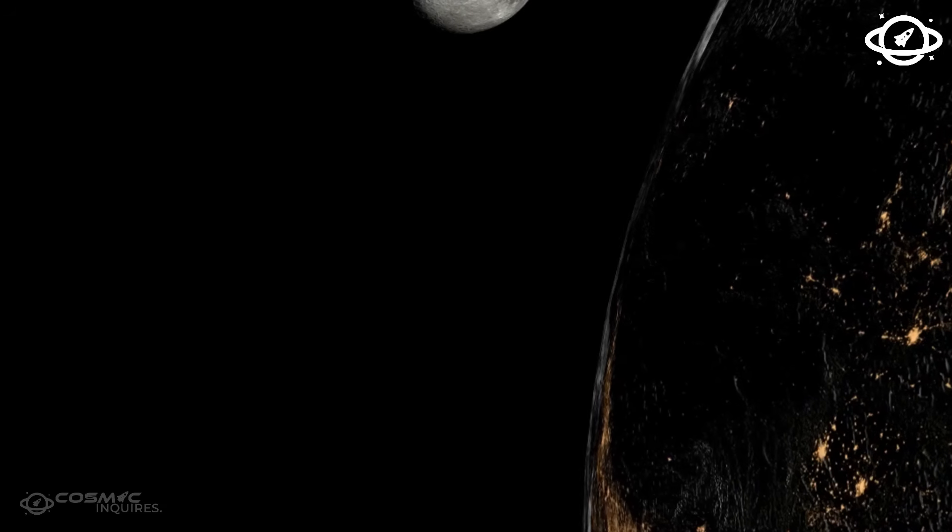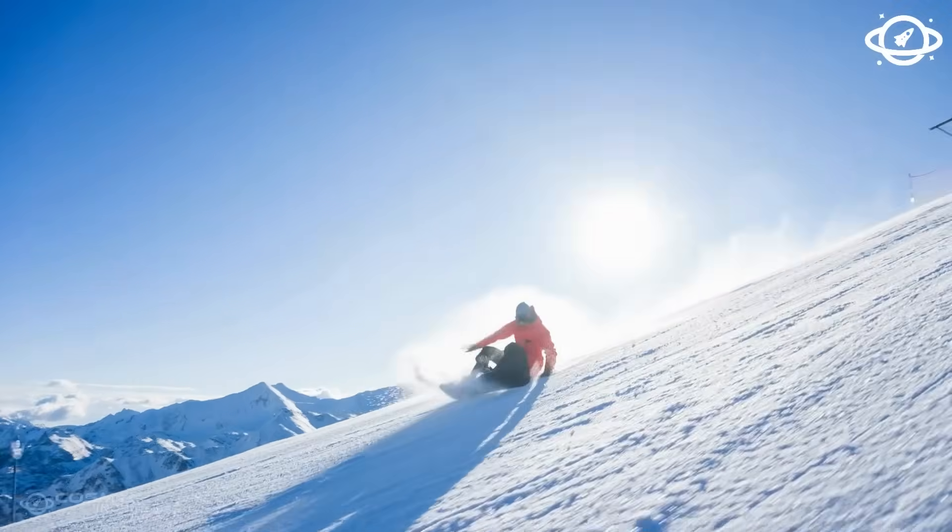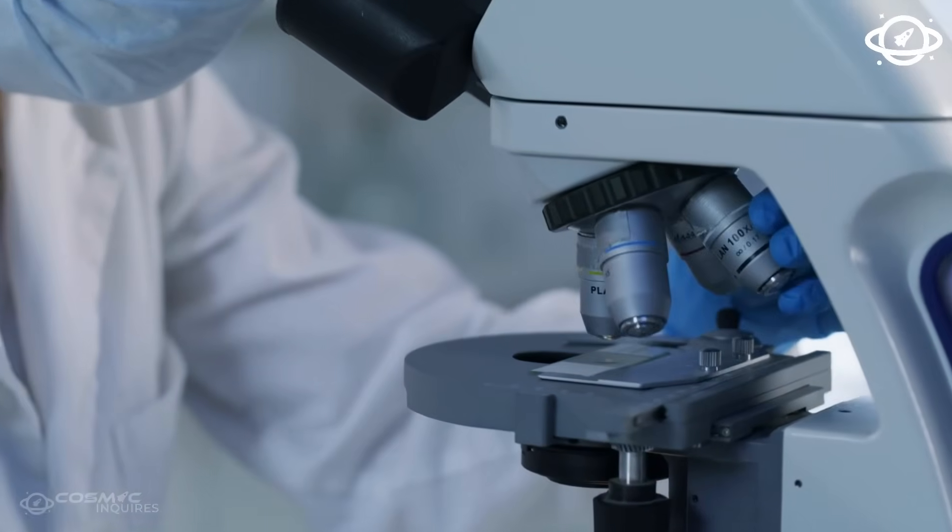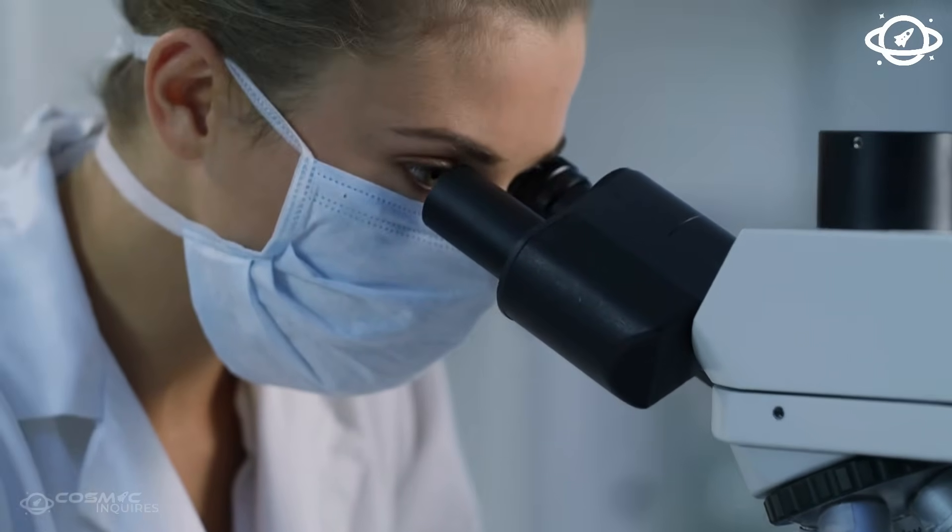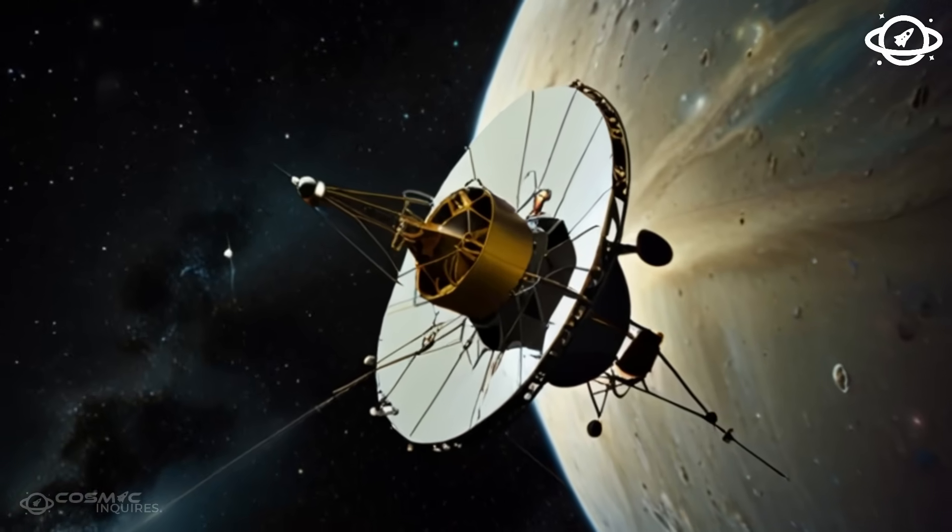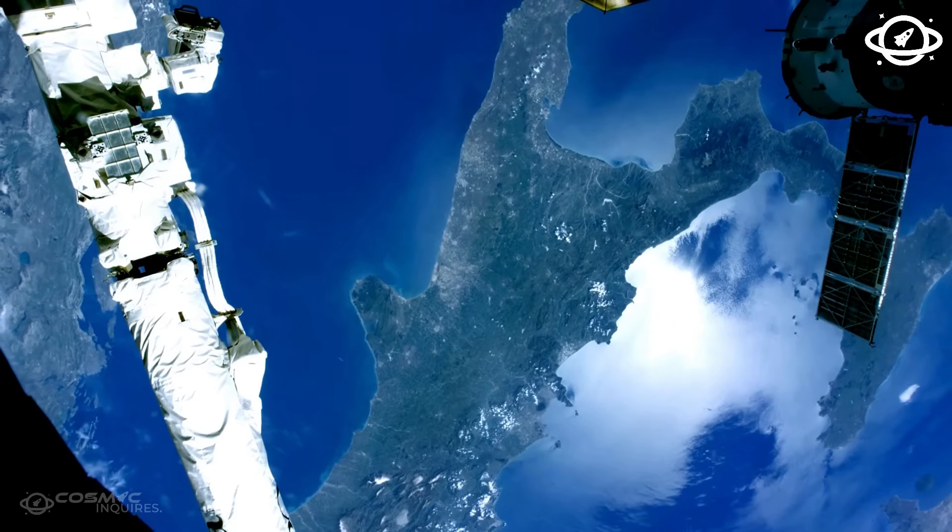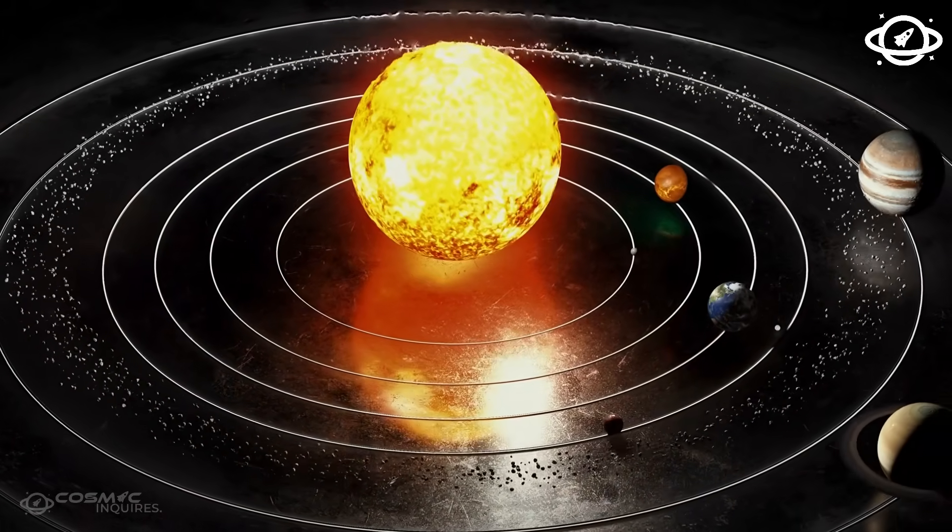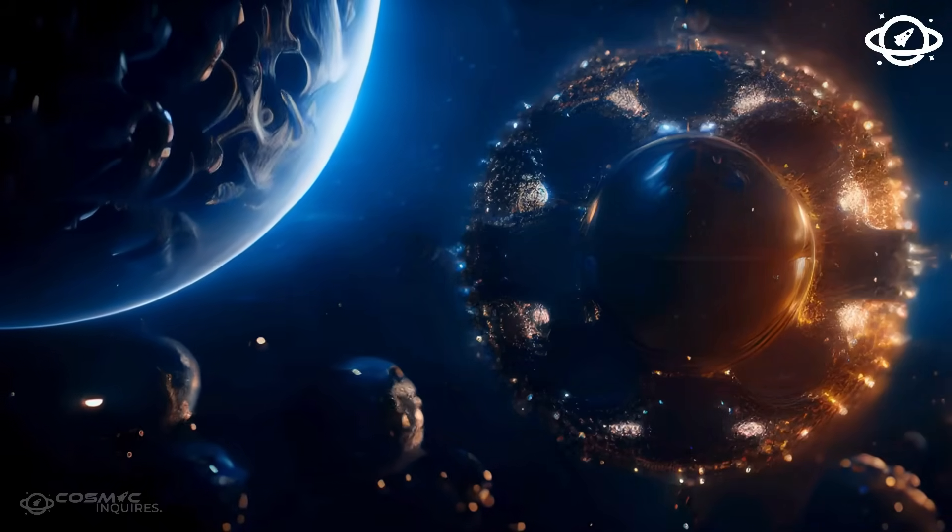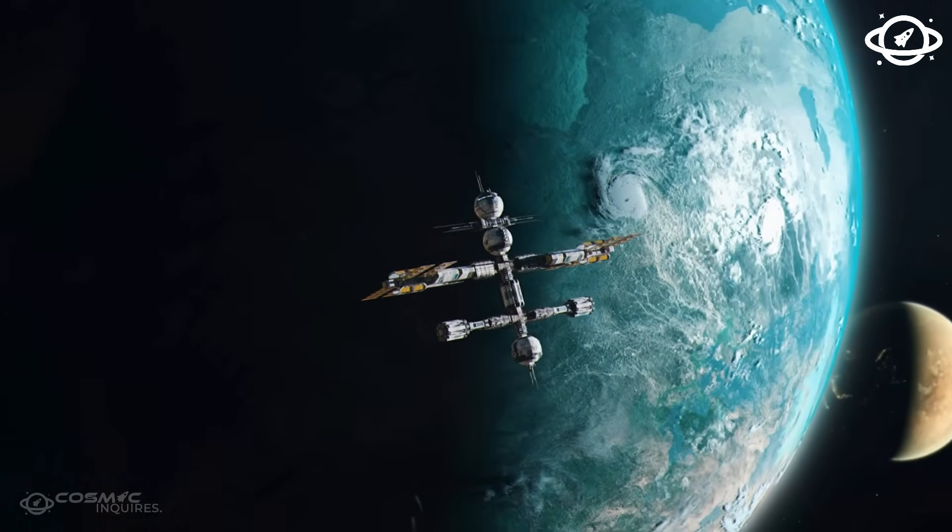In 2012, as Voyager 1 crossed the heliopause, the invisible boundary between our solar system and the rest of the galaxy, it entered truly uncharted territory. At that time, scientists expected a gradual decline in data, a slow fade into the darkness. But that's not what happened. The data kept coming, and in a recent initiative, NASA decided to reprocess archived images from that critical transition point using a newly developed quantum AI system, one capable of detecting patterns far beyond the ability of human analysis or classical computing. What the AI found sent shockwaves through the scientific community.